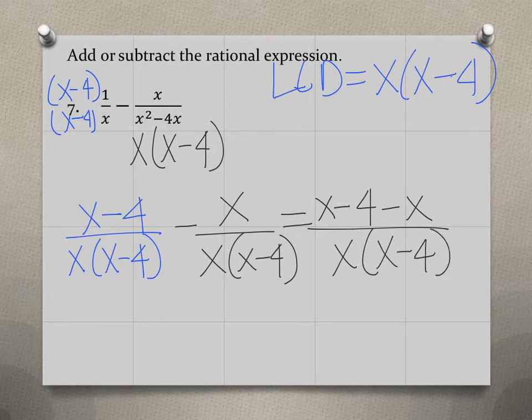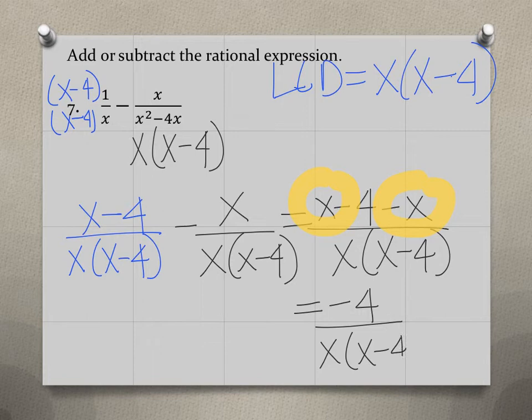So we can combine like terms at the top. At the top we have x minus x, which is 0. So at the top we just have negative 4 divided by x times x minus 4.